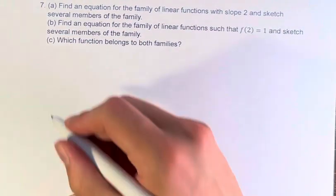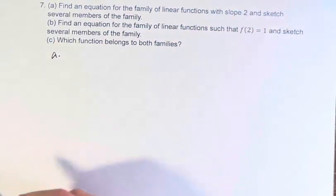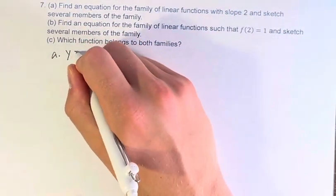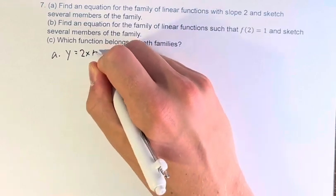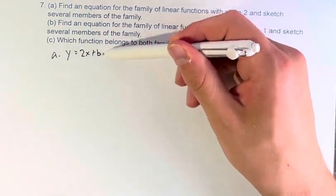So for this family, we can write it in slope intercept form. We have y is equal to 2x plus b, and what differentiates the different members of this family is b, the y-intercept.